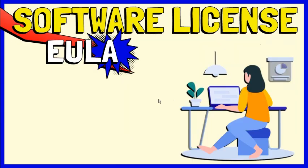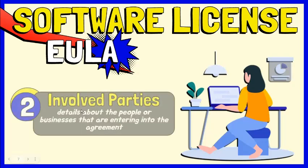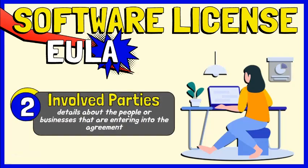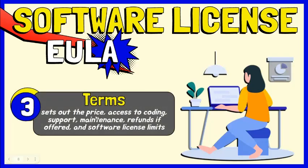Most software license agreements contain at least these sections. General information provides details regarding the type of agreement being established, when the agreement goes into effect, and how long it will be active. Involved parties provides details about the individual or company that is entering into the agreement. Terms sets out the terms of the agreement, such as the price of the license and whether it is a one-time flat fee or requires annual fees.